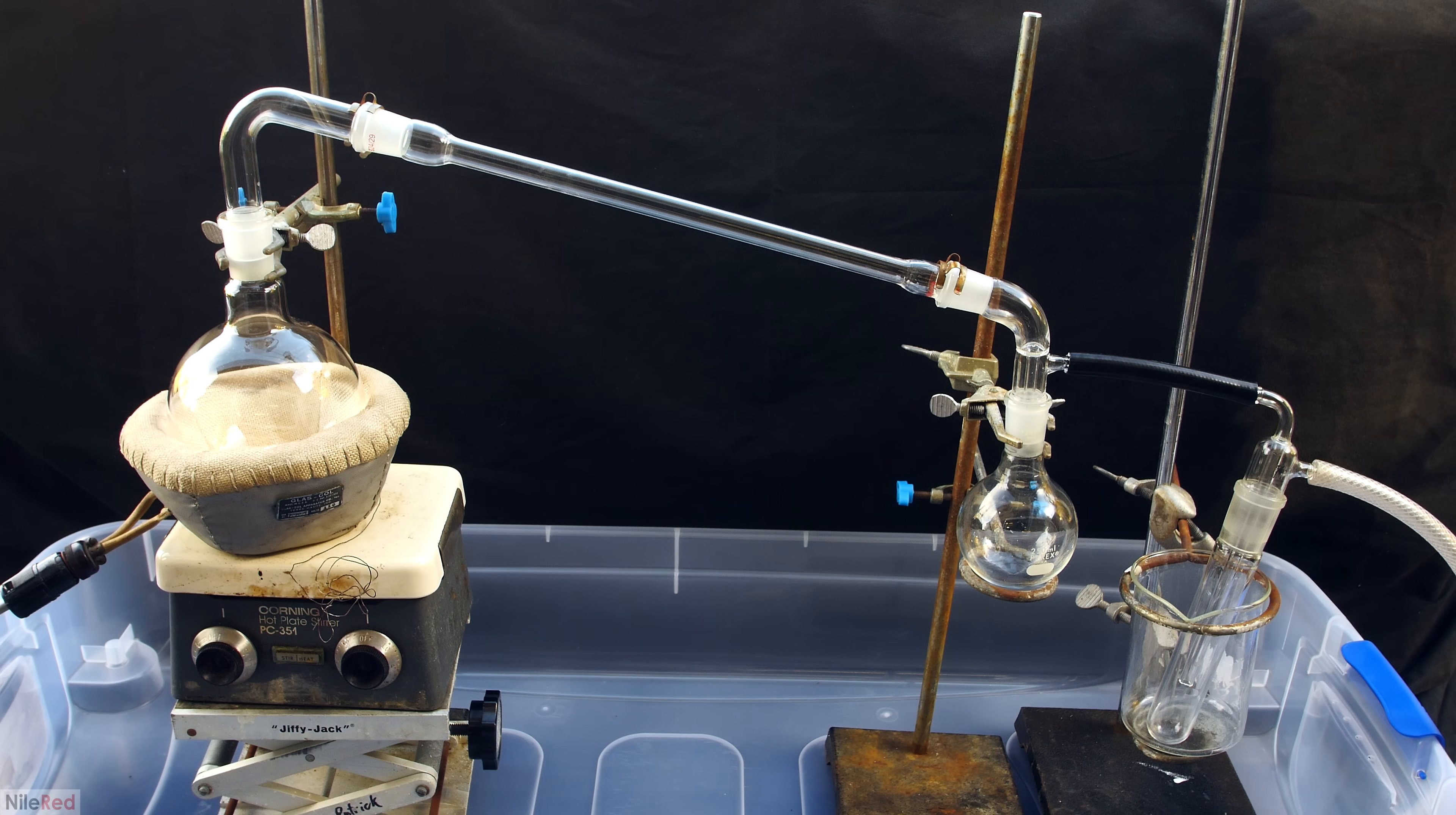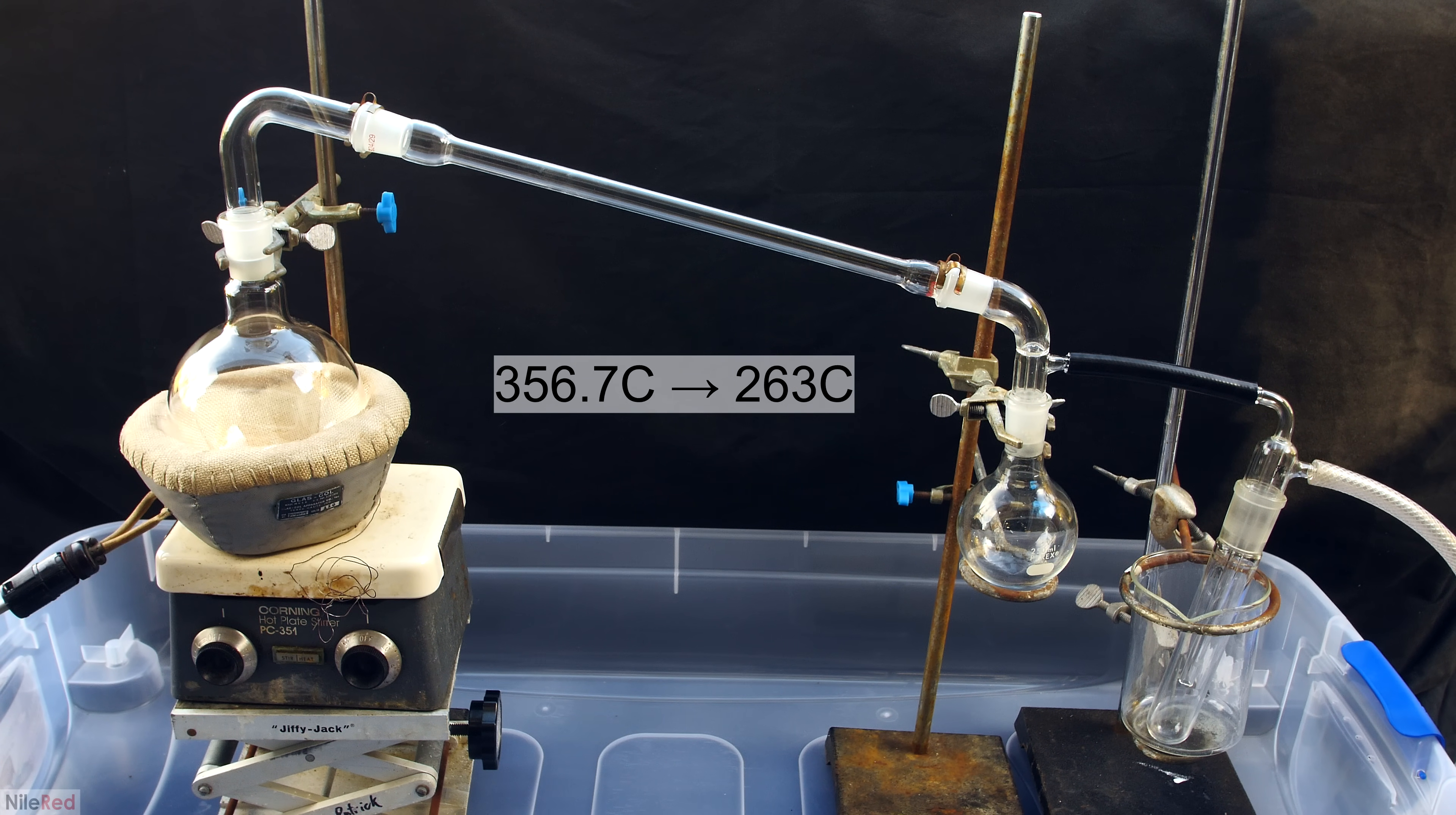Anyway, moving on, the mercury will condense in the air condenser, and be collected in the receiving flask on the right. I decided to do this distillation under vacuum, because it allows me to boil the mercury at a much lower temperature. The normal boiling point of mercury is around 360 C, and under my vacuum, I can probably get it to boil at around 260.